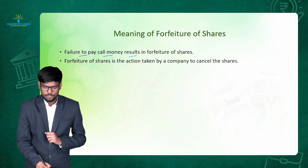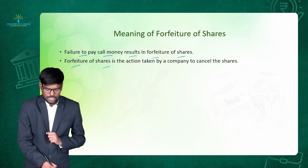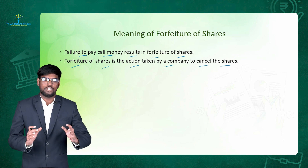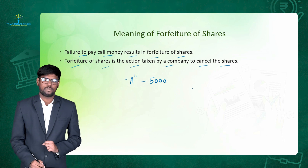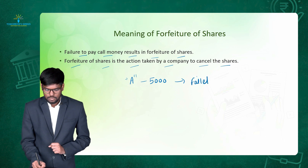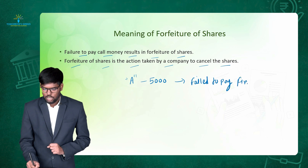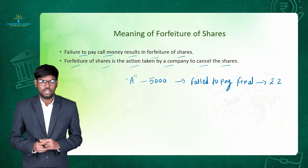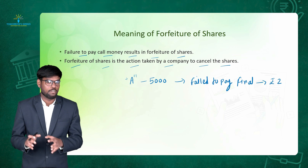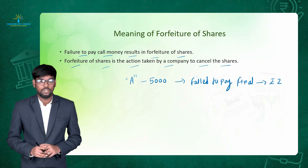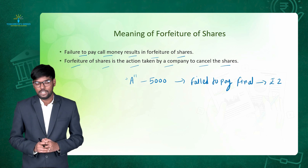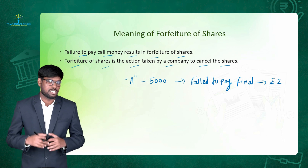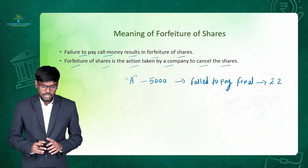Failure to pay call money results in a forfeiture of shares. Forfeiture of shares is action taken by a company to cancel the shares. For example, there is one shareholder holding 5000 shares of the company and he failed to pay final call money of rupees 2 per share. The company sent him reminder letters two or three times, but he was still unable to make the payment. So the only option left is to cancel his shareholding — that is forfeiture of shares. On forfeiture, A is no longer a member of the company and his name is removed from the register of members.